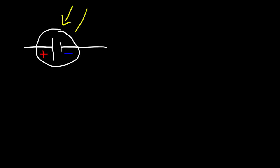Now let's talk about the solar cell. There are different ways to draw its diagram. Just as a battery generates a voltage for a circuit, a solar cell can do the same thing. A battery converts chemical energy into electrical energy, but a solar cell converts light energy into electrical energy. Another way to represent a solar cell is to draw a diode with light energy coming in as opposed to light energy coming out.